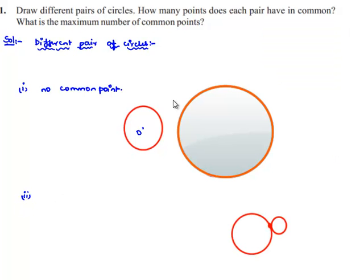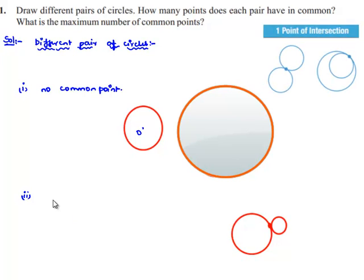Secondly, here let us consider a pair of circles having one point in common. That is shown in the figure—circles respectively with centers O and O' having only a single point in contact.